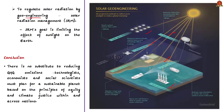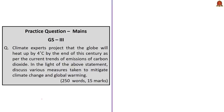Such geoengineering ideas could bring unpleasant side effects and are also quite costly. This is why the author concludes there is no substitute for reducing greenhouse gas emissions. Instead of creating a problem and then trying to reduce its side effects, it is better to prevent problems in the first place. The author stresses that technologists, economists, and social scientists must plan for a sustainable planet based on the principles of equity and climate justice, not only within nations but also across nations.